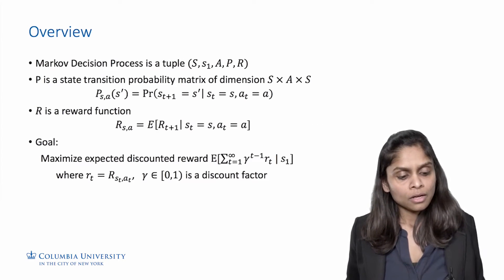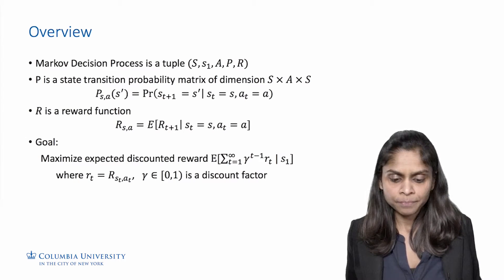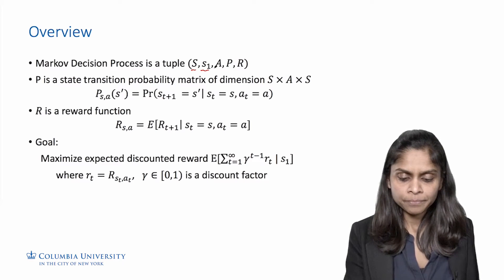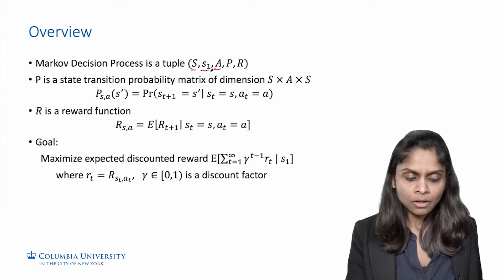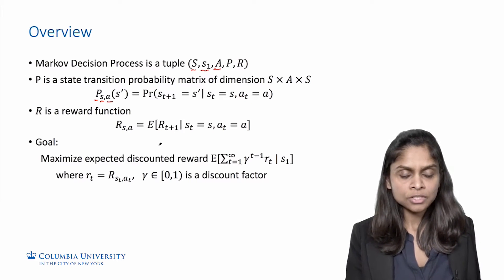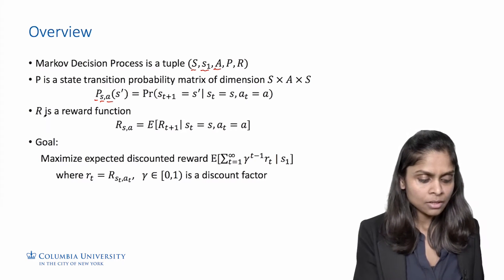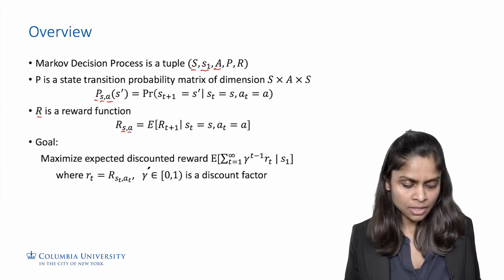To recall, a Markov decision process, or MDP, is a tuple of five parameters: the space of states, the starting state from this space, the space of actions, the transition probability model given by a matrix P — which specifies for every state and action the distribution of the next state if that action was taken in that state — and the reward function R, which specifies for every state and action the expected reward if that action was taken in that state.